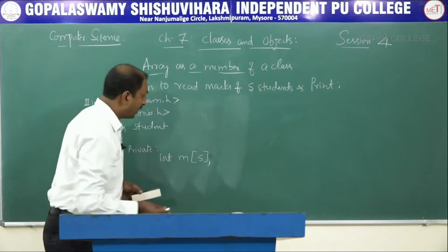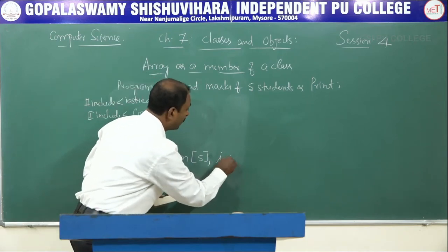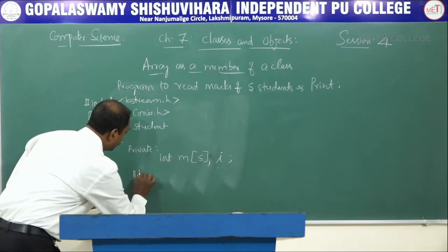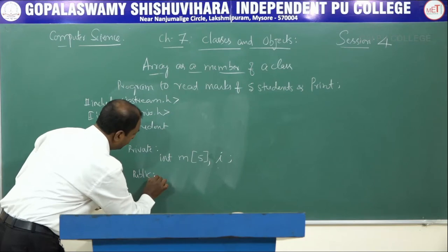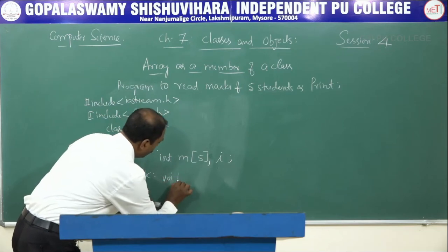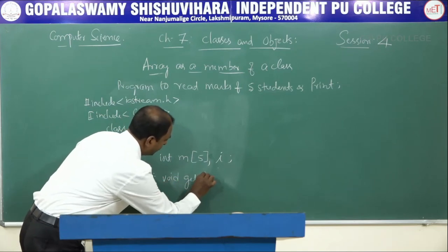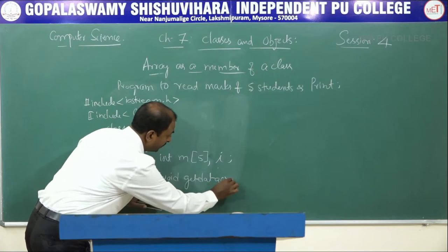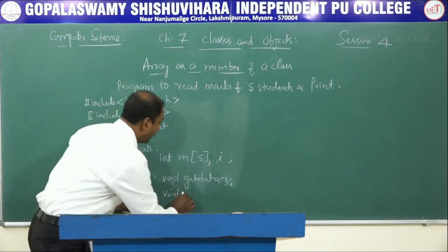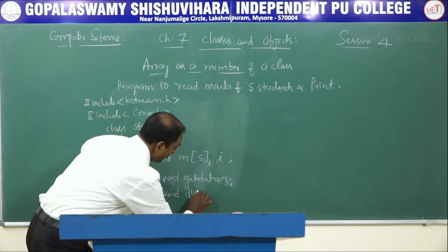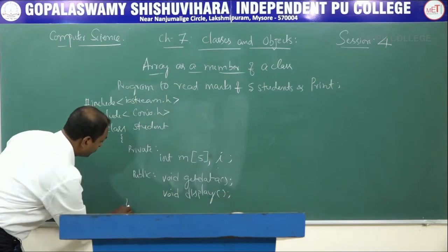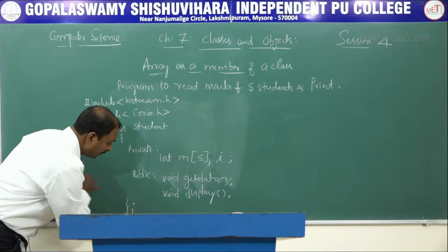Along with the array, we need one more variable i as the loop control variable. Under public, we define two functions: void getdata and void display. Then we close the class with a semicolon.